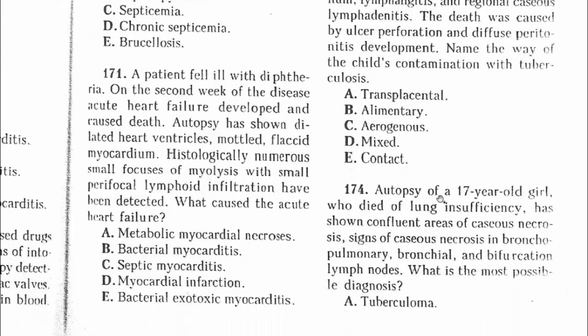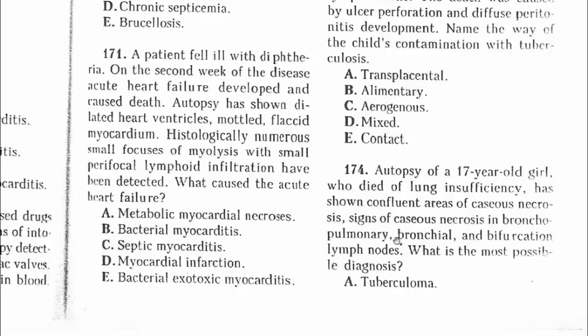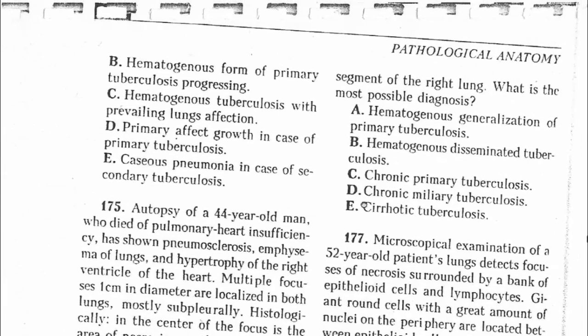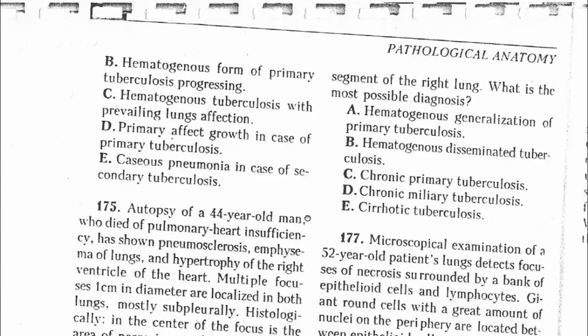Question 174: Autopsy of a 17-year-old girl who died of lung insufficiency has shown confluent areas of caseous necrosis and signs of caseous necrosis in bronchopulmonary, bronchial, and bifurcation lymph nodes. This can be diagnosed as childhood tuberculosis, also known as primary tuberculosis, because the growth of injury is characterized by enlargement of caseous necrosis which erodes the bronchial tree. The answer is D.